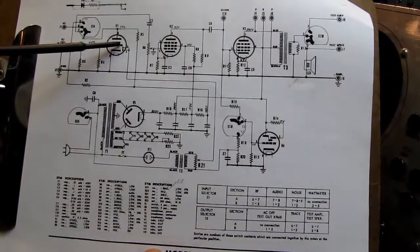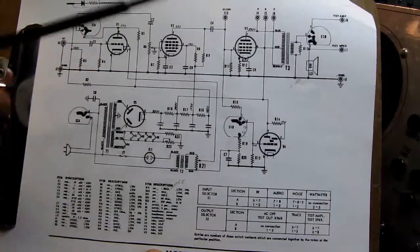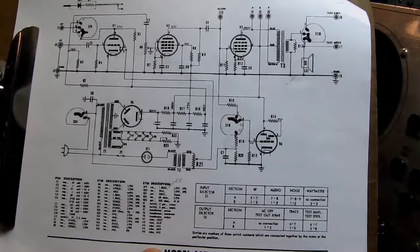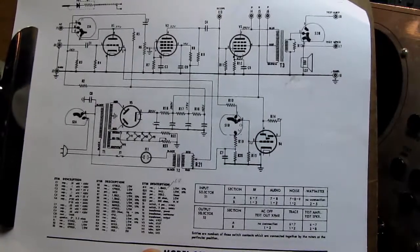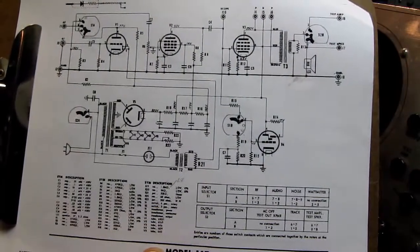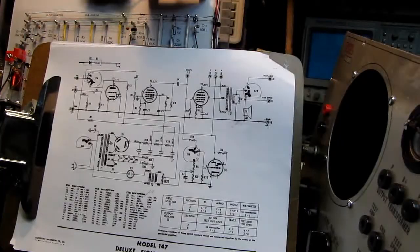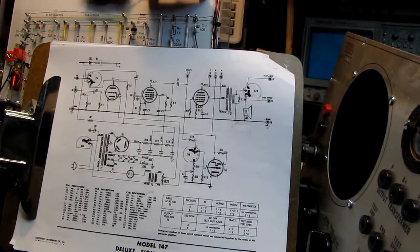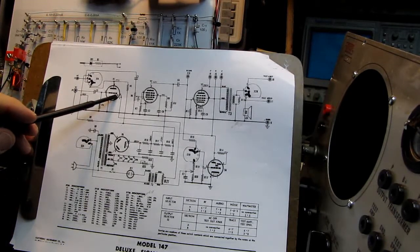This goes to a rectifier section up here. The more DC it produces, the more it deflects the tuning eye or the magic eye tube. And yep, checked the tube too, the 6SQ7 that has the diode section in it.